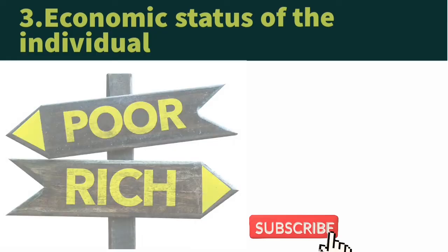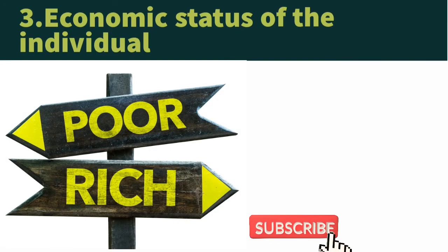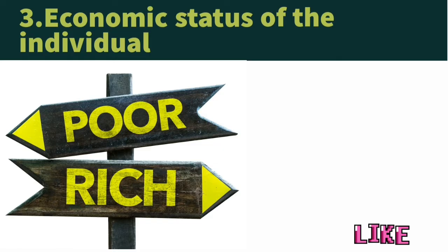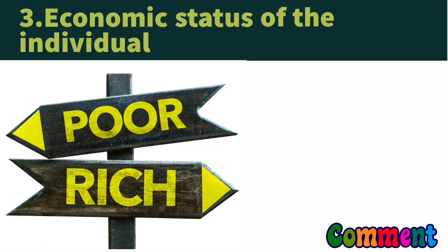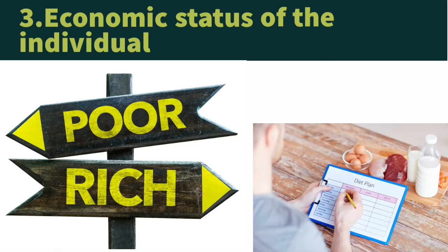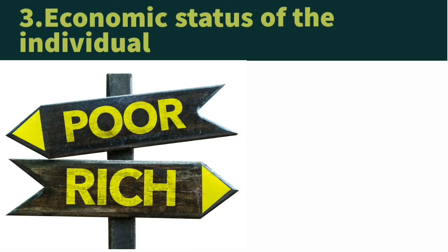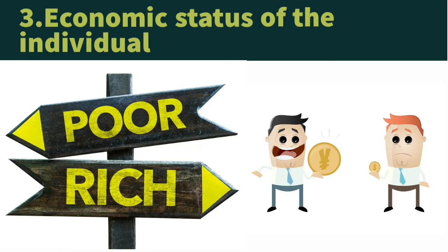The third important factor is the economic status of the individual. When formulating a balanced diet, it is very important to consider economic status. You cannot include a costly food item for a person who cannot afford it, because it is beyond their purchasing capacity. According to that, you can prepare a low-cost diet. Even though it is low-cost, it includes all the essential nutrients.